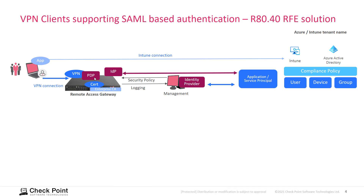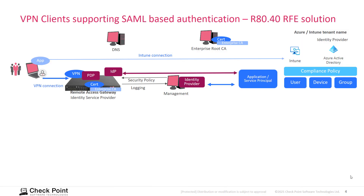The policy decision point on the security gateway will be able to generate identity awareness sessions. In order to make this environment work, we need to have DNS resolution and certificates working as expected. The VPN gateway needs to have a certificate that is trusted by the VPN client. Authentication using SAML protocol means that a browser instance is talking to a web server instance, which is why the certificate issued to this gateway needs to be trusted by the VPN client and by the operating system running the VPN client.